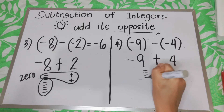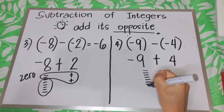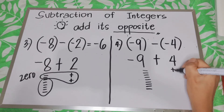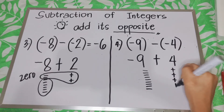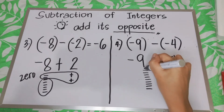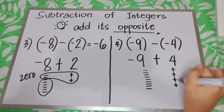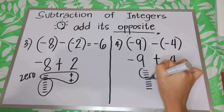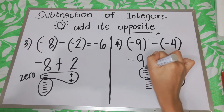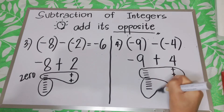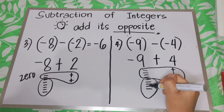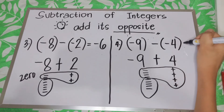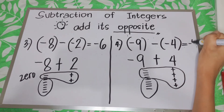So when you add, how many negatives? We have 9 negatives. Then how many positives? We have 4 positives. So how many pairs of zero? We have 4 pairs. Now what's left? We have 5 negatives. So the answer will be negative 5.